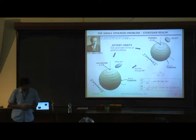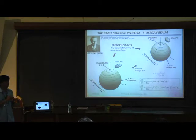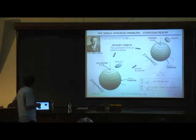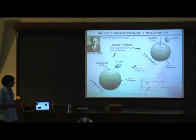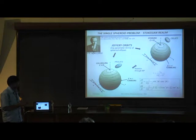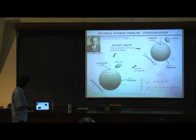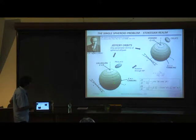For dilute suspensions, you again have a single spheroid problem. Jeffrey solved how a single spheroid behaves in shear flow. He showed that the orientation vector of a spheroid in simple shear moves along closed orbits, now known as Jeffrey orbits. These are spherical ellipses — elliptical in shape, bent back to lie on the unit sphere. For the prolate spheroid, orbits are elongated along the flow direction; for oblate, they are stretched along the velocity gradient direction.